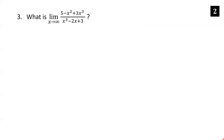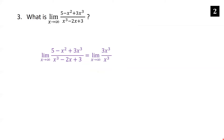What is the limit as x goes to infinity of 5 minus x² plus 3x³ over x³ minus 2x plus 3? We keep only the highest power of x in numerator and denominator. The highest power on top is 3x³ and on the bottom is x³. Canceling x³ gives 3. Remember: equal degrees yield the leading coefficient ratio; larger bottom degree gives 0; larger top degree gives infinity.